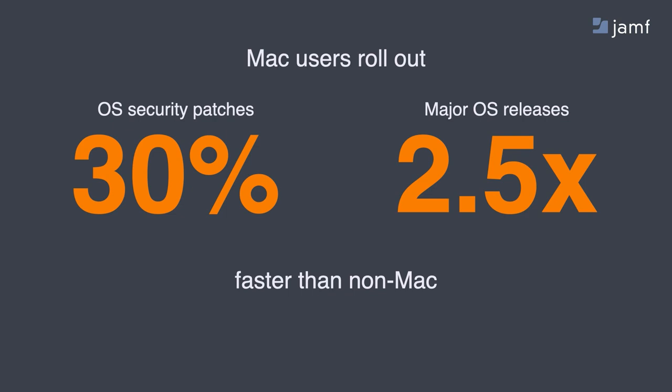Mac users roll out security patches 30% faster and major OS updates two and a half times faster than non-Mac environments. Delaying rollouts of patches introduces serious risks — attackers can leverage the knowledge from patches to build effective attacks for unpatched systems. Mac admins are good at rolling out patches, but we still need to do better as an industry. Reducing the time between when a patch is announced and when it is deployed can significantly reduce the attack surface of a fleet. An advantage of Mac is that the native security tools receive silent automatic updates, so users benefit from updated known-bad lists without having to deal with compatibility issues.